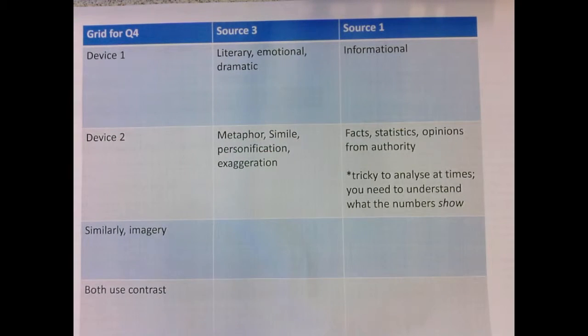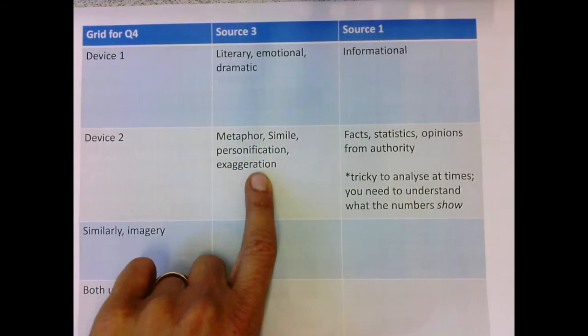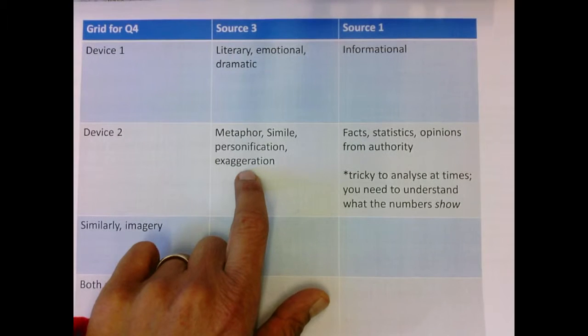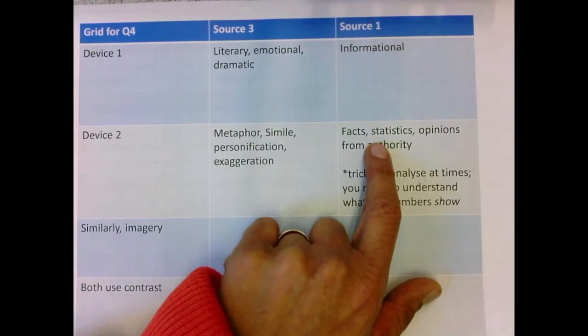In source one, in contrast, it will always be an informational question. That means there will have things like facts, statistics, opinions. They may have metaphor, simile, and these literary things. But if we were to bet, it is more likely that these would occur here. And these are almost certainly going to be here.